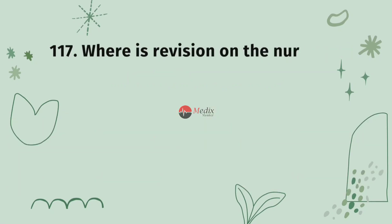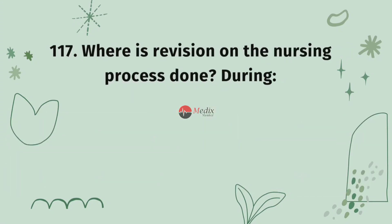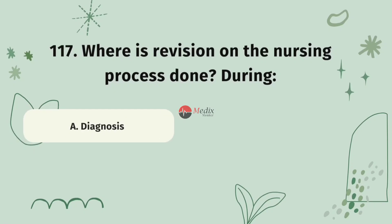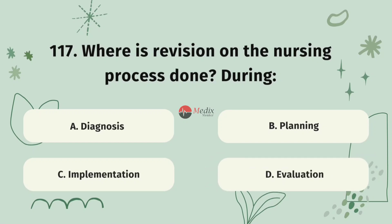Question 117. Where is revision on the nursing process done? During: Option A, diagnosis. Option B, planning. Option C, implementation. Option D, evaluation. The correct answer is D.